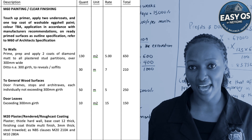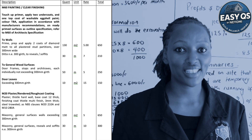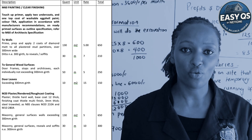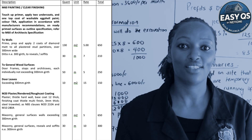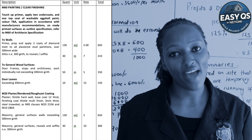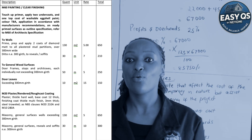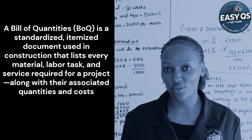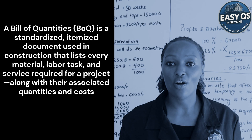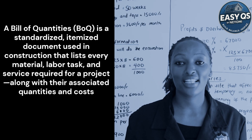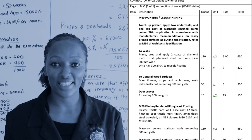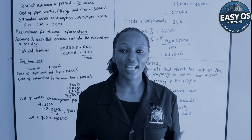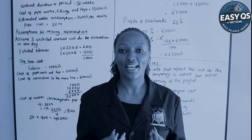How many doors or windows are in a building — that's a unit. We will be bringing a bill of quantities to your screen so you can go through it. A bill of quantities is the document that has all the details of cost concerning a certain project — everything is priced within it.